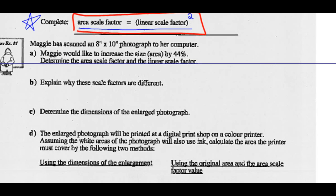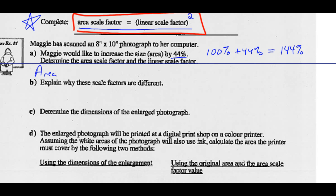Let's do example one. Maggie has scanned an 8 by 10 photograph for her computer, and she would like to increase the size of the area by 44%. If I'm going to increase by 44%, that means I'm starting with 100% and increasing by 44%, so that means I've got an enlargement of 144%. The area scale factor would be 144%, or as a real number, 1.44.